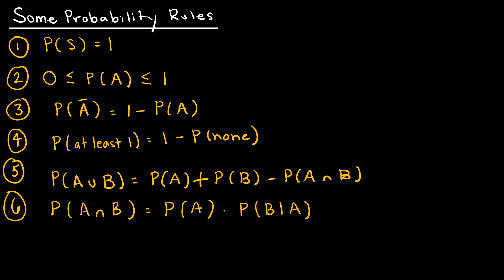Let's look at some of the probability rules. Some we'll talk about in detail in this video, and some in the next video. Rule 1: the probability of all events in the sample space is equal to 1. Rule 2: probabilities have to be between 0 and 1. Each and every event has a probability between 0 and 1, but the sum of all the probabilities of events in a sample space must add to 1.